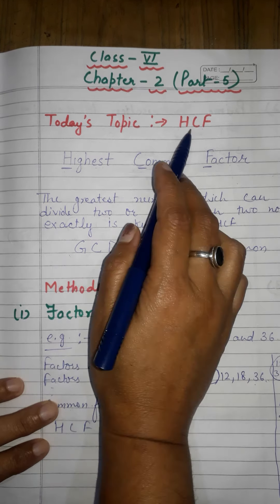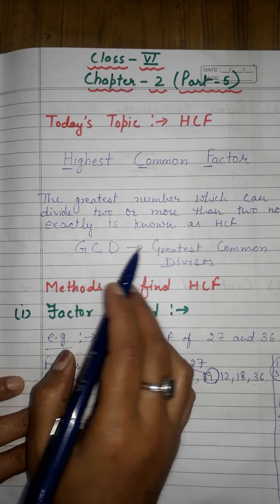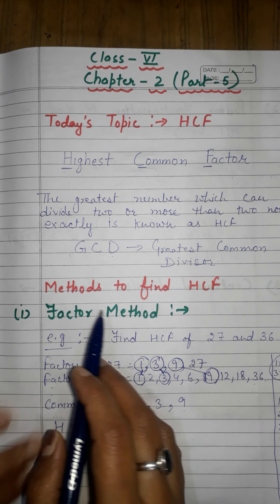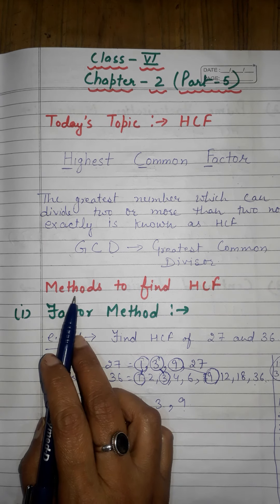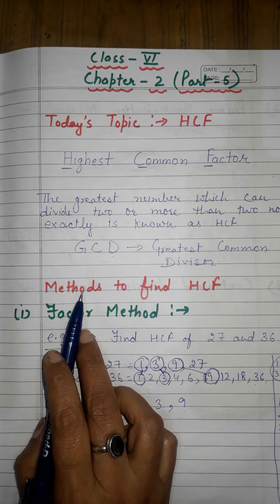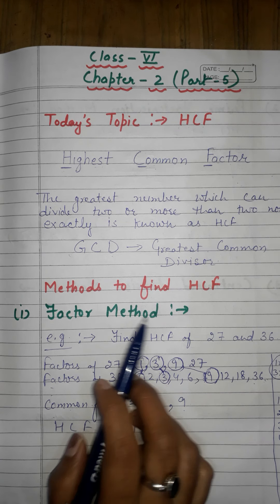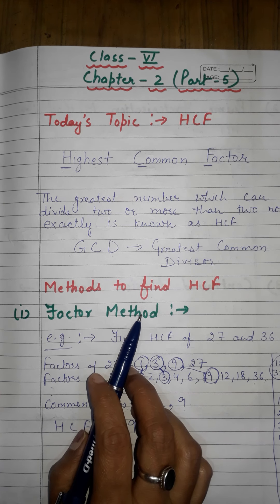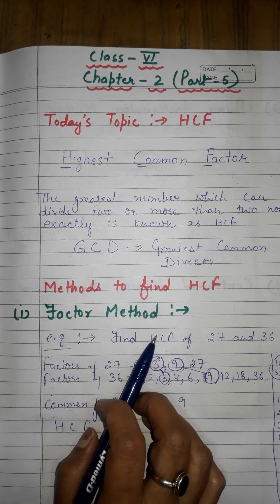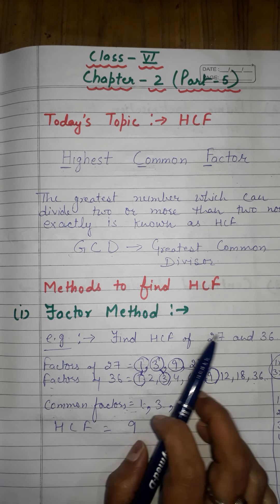GCD and HCF are both the same terms — Greatest Common Divisor and Highest Common Factor. In this video we will discuss the methods to find the HCF. There are three methods: the first is the Factor Method, which we have also discussed in Class 5.